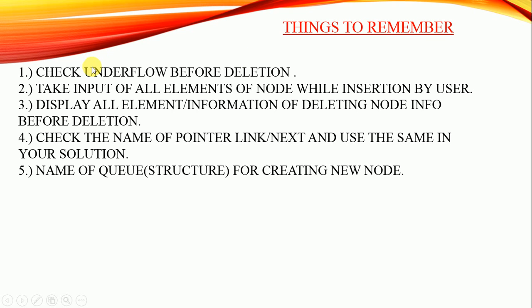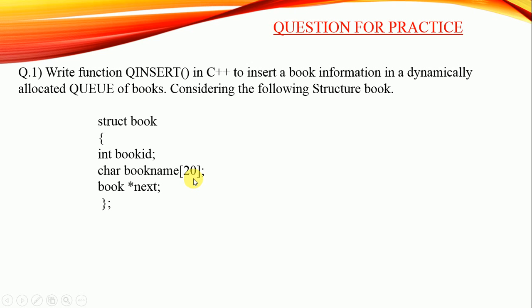Things to remember: before deletion, always check for underflow. During insertion, take input of all elements of the node. Before deletion, display all information of the deleting node. Also check the name of the pointer — whether the structure uses 'link' or 'next' — so you use the correct name in your code. Similarly, note the name used for the queue node when creating a new node or a temporary pointer.